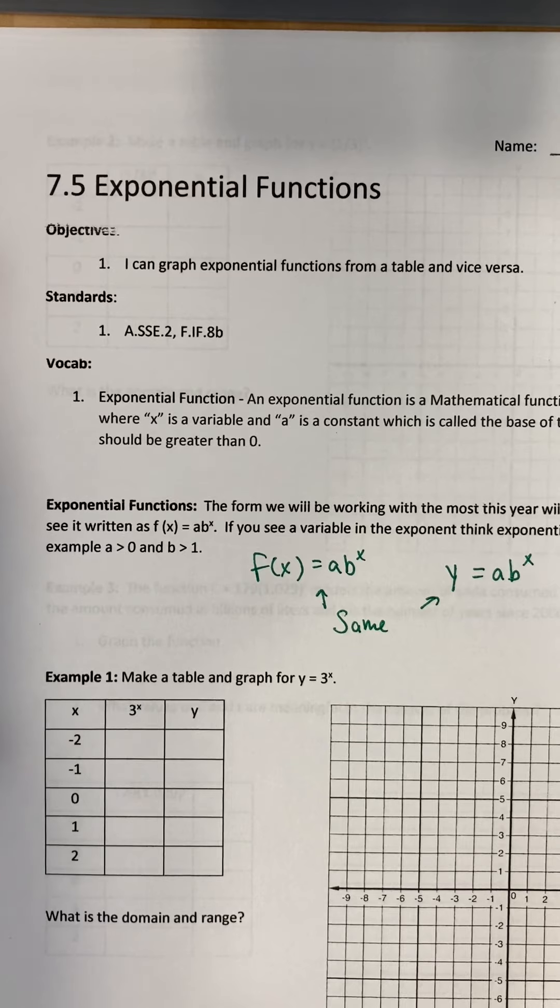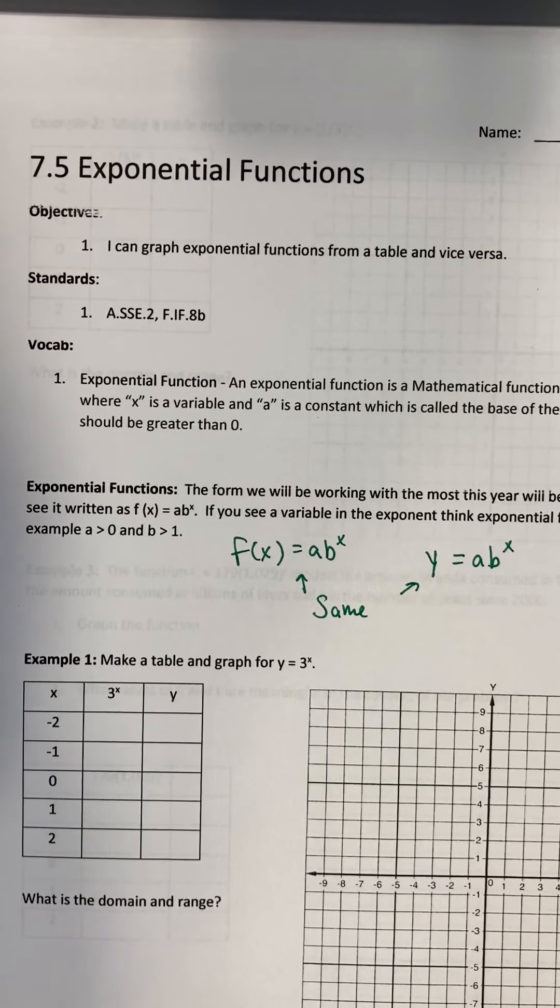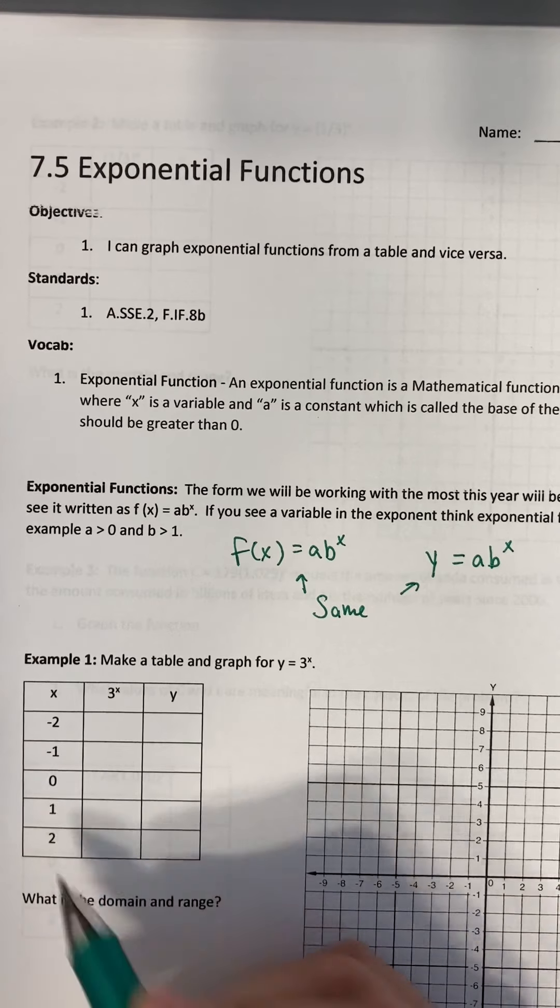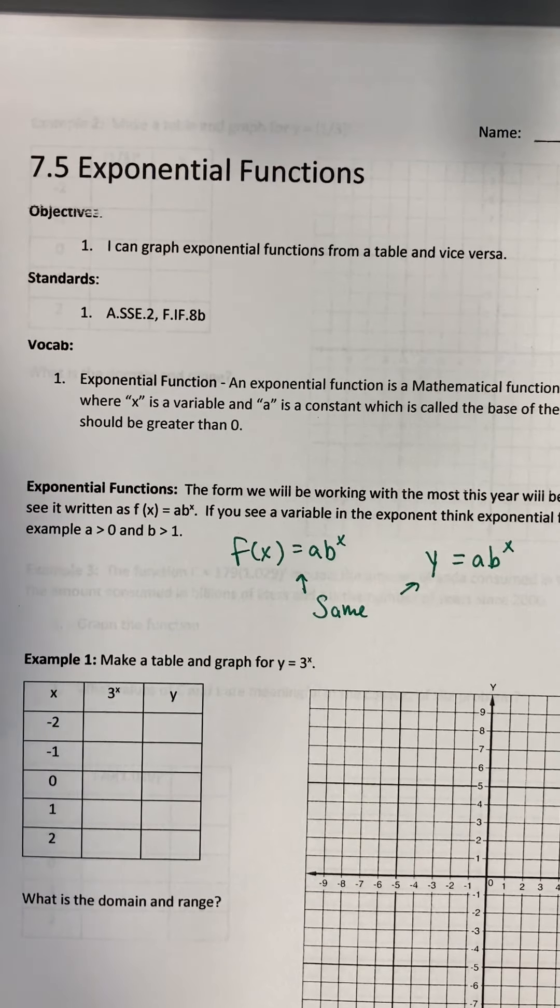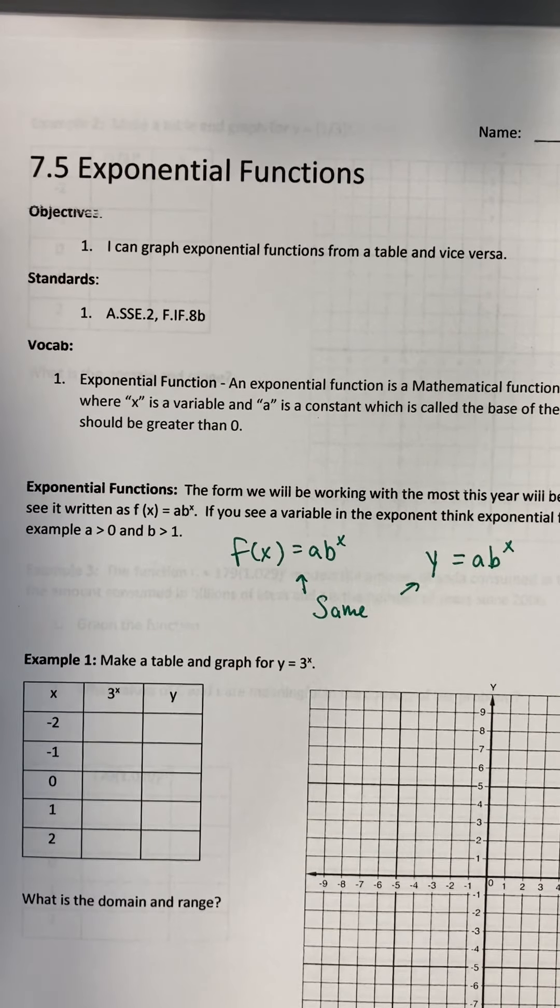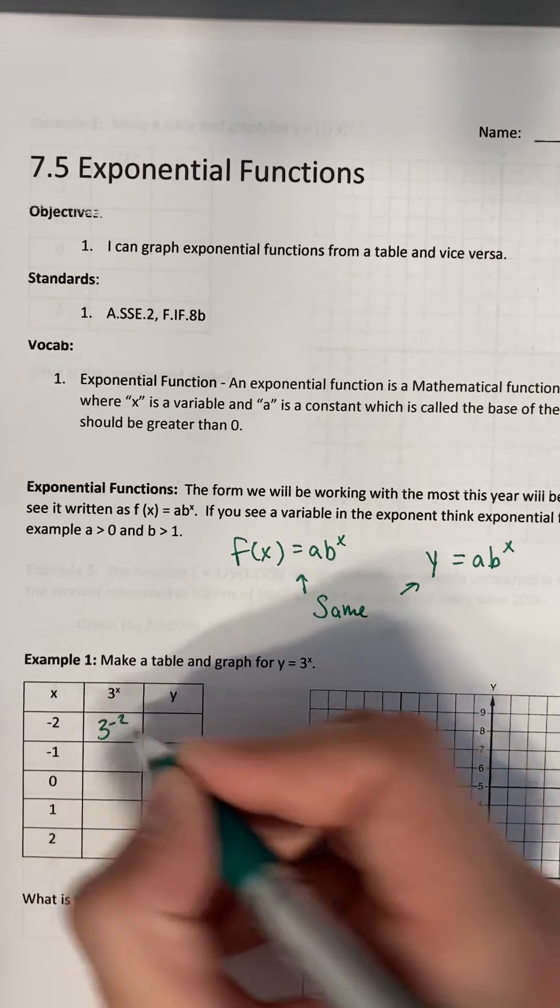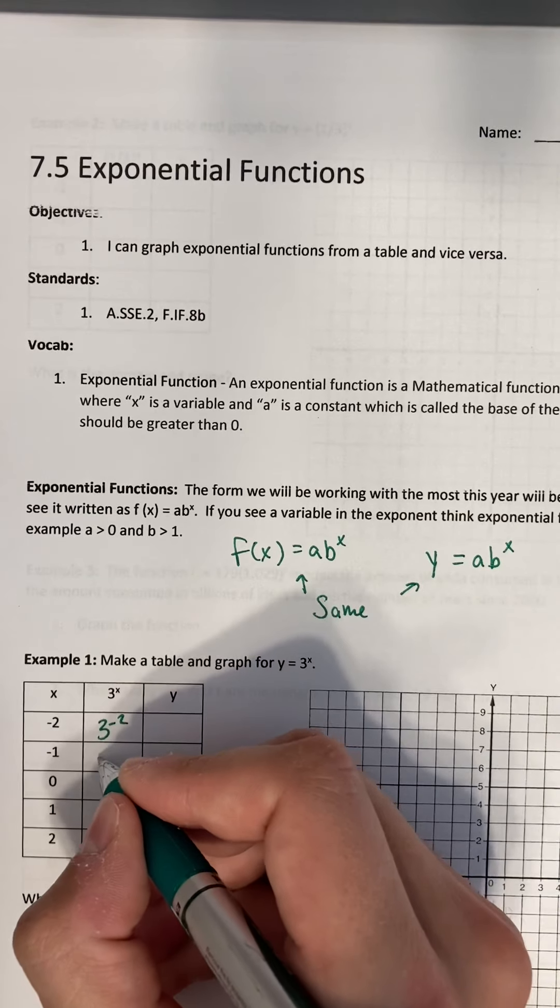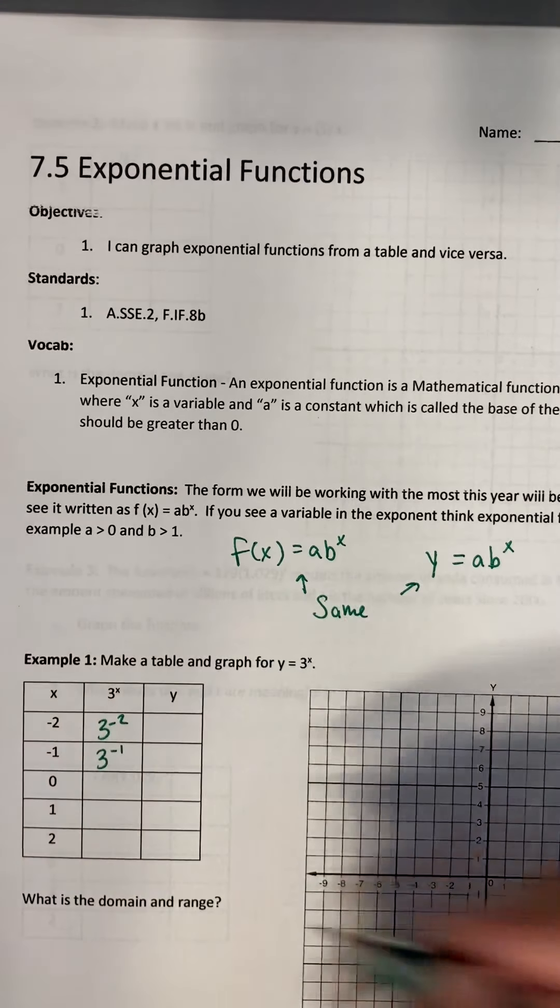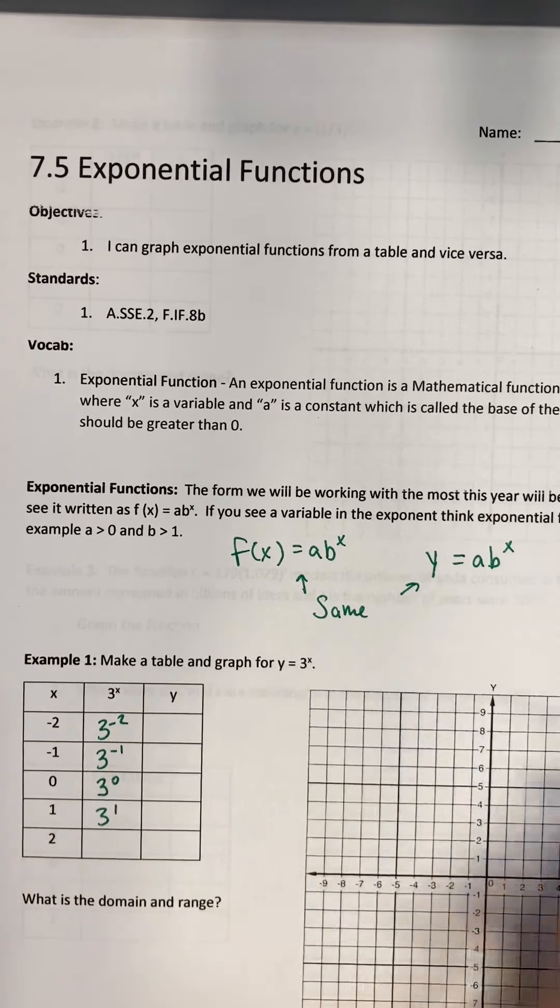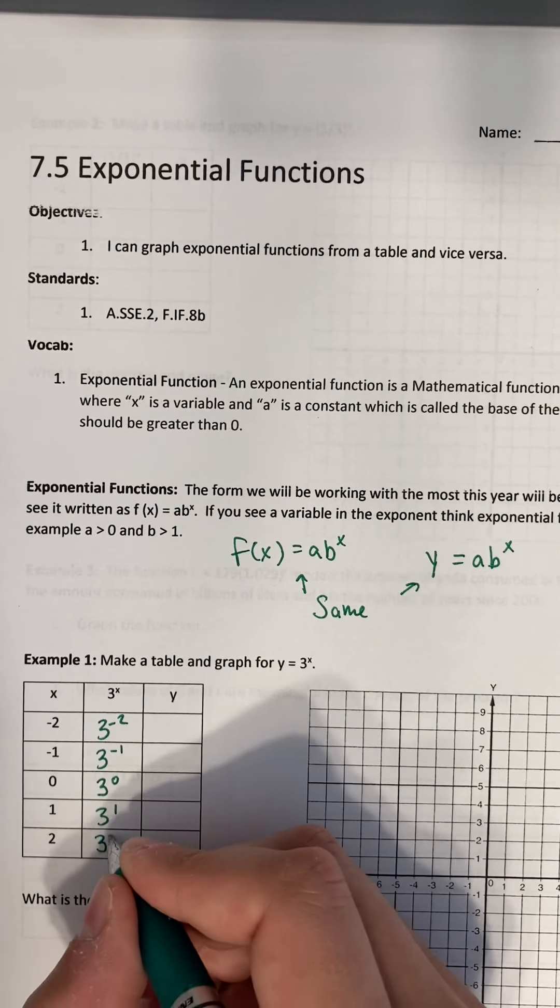It says make a table and graph y equals three to the x power. What I like to do for these is make a table with negative two, negative one, zero, one, two. Those are just the baseline for graphing, I think they're the easiest. So let's plug those in. We'll have three to the negative two, three to the negative one, three to the zero power, three to the one power, and three squared.